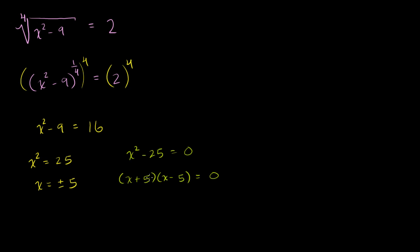And if the product of two numbers is equal to 0, that means that either one or both of them is equal to 0. So x plus 5 is equal to 0, or x minus 5 is equal to 0. And we get x is equal to negative 5, or x is equal to positive 5. Which is what we got right there.